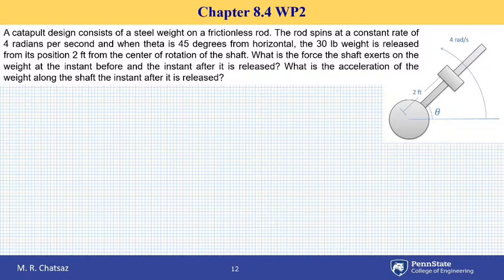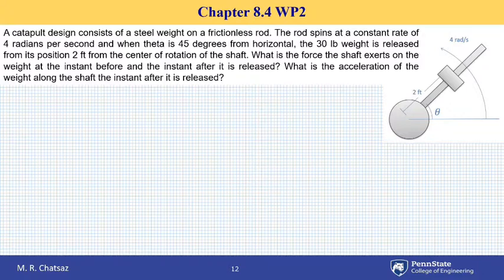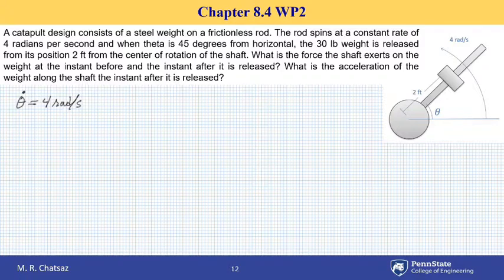Hello and welcome back everybody. Here we have an example of a kinetic problem in a polar coordinate system. The diagram shows a catapult design that consists of a disc welded to a frictionless rod, and we have a steel weight that can freely slide along the rod. Initially the steel weight is glued to the rod and cannot move relative to it. The rod spins at a constant rate of four radians per second — theta dot equals four radians per second — and when theta is at 45 degrees from horizontal, the 30-pound weight is released from its position two feet from the center of rotation.